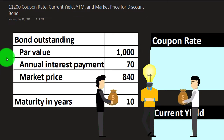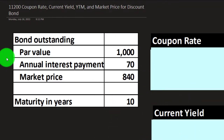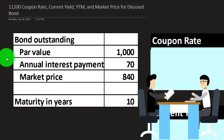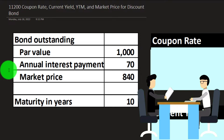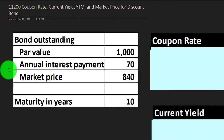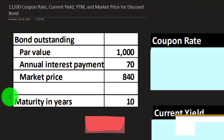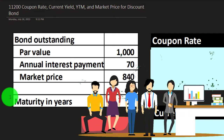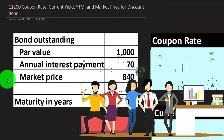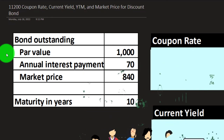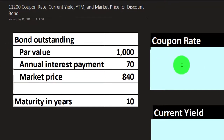The market price is $840. That amount being less than the par value means it's issued at a discount, meaning if we were purchasing the bond, we'd be paying $840 for it. We're going to get a series of payments of $70 on a yearly basis until maturity, which is 10 years into the future. And then at maturity, we'll also get the $1,000 back, which is the face amount of the bond.